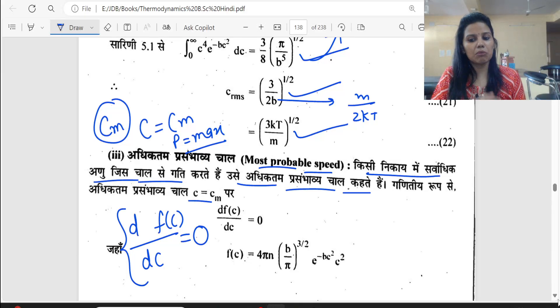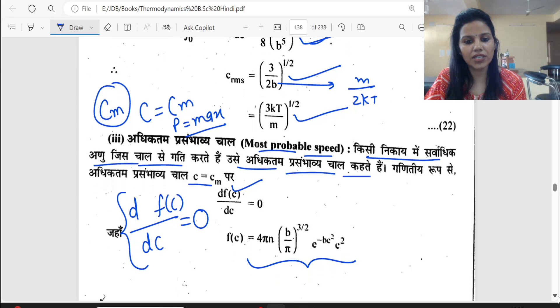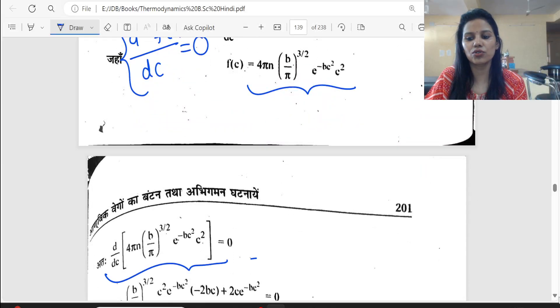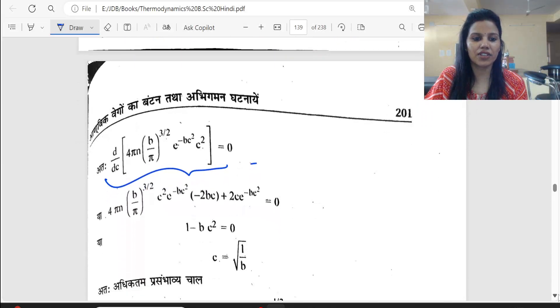If it is a minimum or maximum, the first derivative with respect to C is zero. So dFc by dC equals zero. We have the Fc value from the previous lecture. We will do the differentiation of this value.